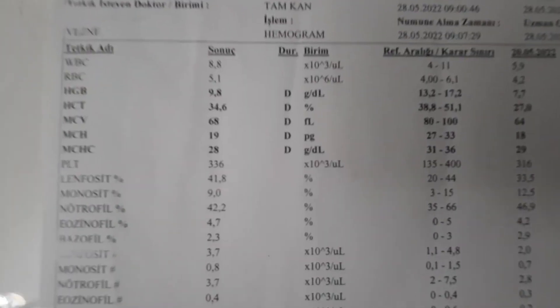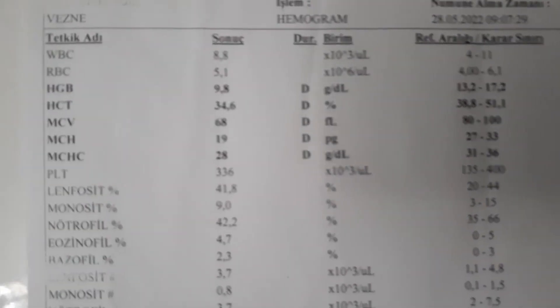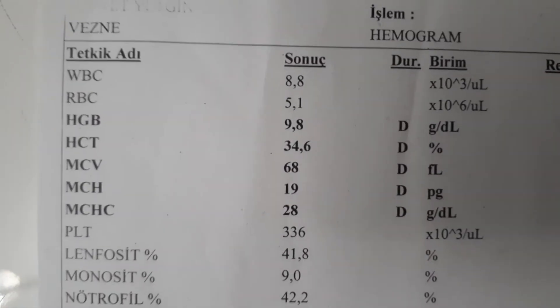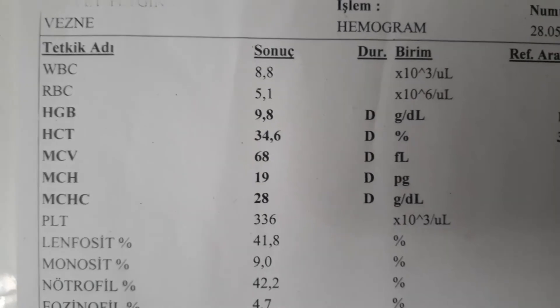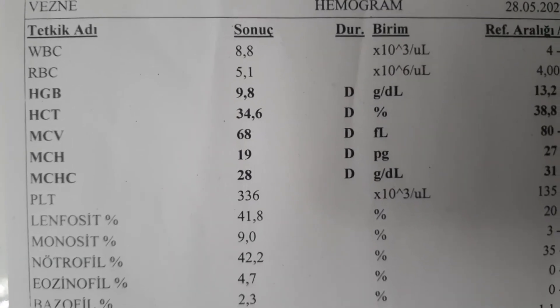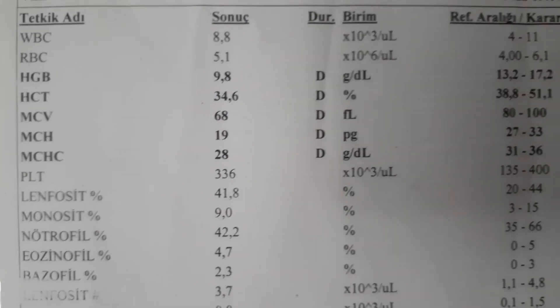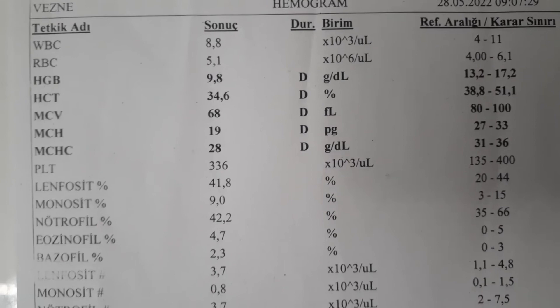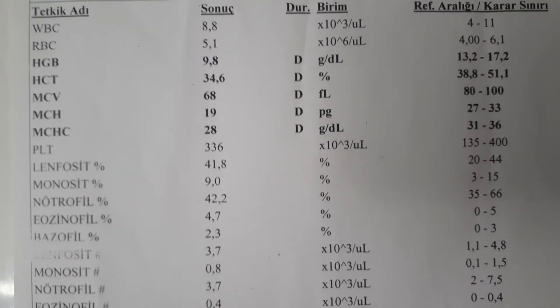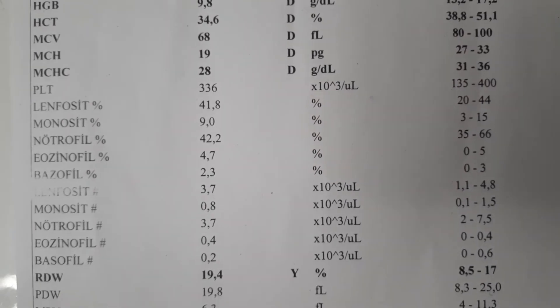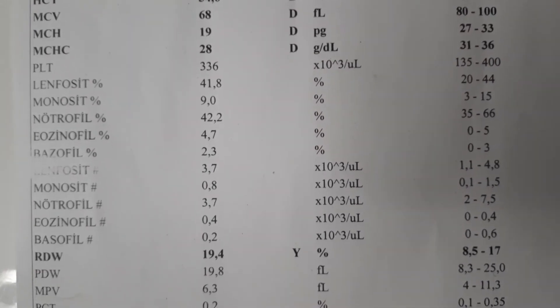Now let's apply what we've learned to this patient's results. Hemoglobin, hematocrit, MCV, MCH, and MCHC levels are all low — so this patient has anemia. The low MCV indicates microcytic anemia, meaning the erythrocytes are small in diameter. The RDW is also high, which is typically seen in iron deficiency anemia. So this patient most likely has iron deficiency anemia. That's all for the hemogram test — see you in the next video!